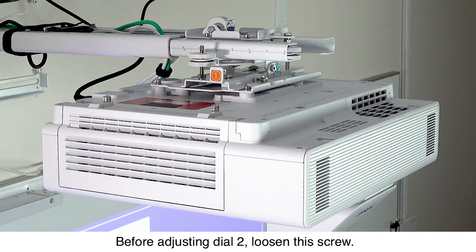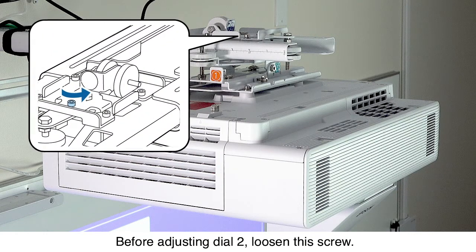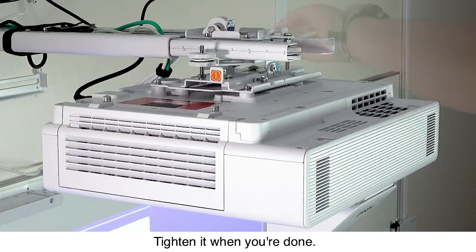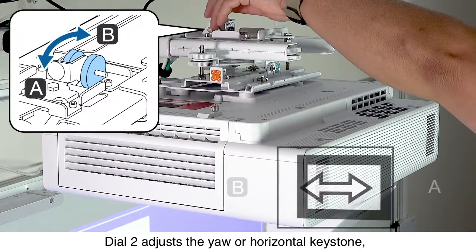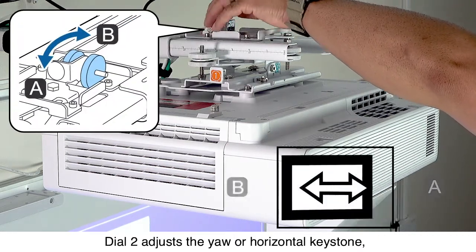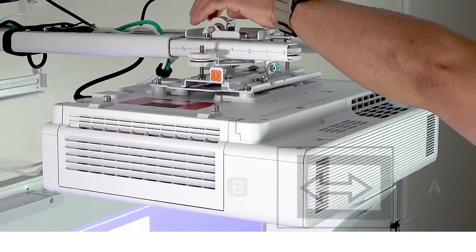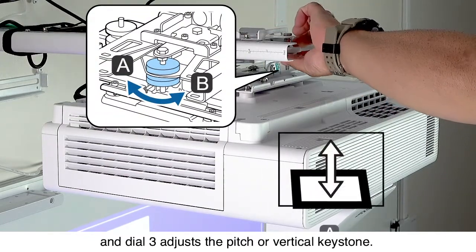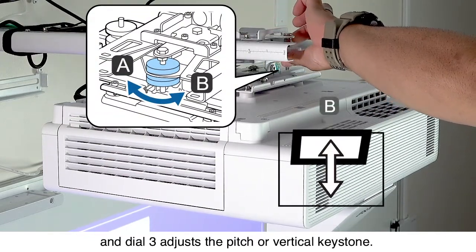Before adjusting dial 2, loosen this screw. Tighten it when you're done. Dial 2 adjusts the yaw or horizontal keystone, and dial 3 adjusts the pitch or vertical keystone.